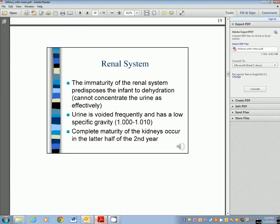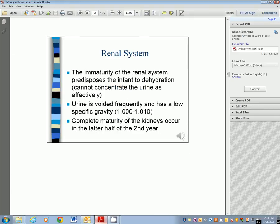The renal system. The immaturity of the renal system predisposes the infant to dehydration. If they can't concentrate the urine effectively, it's going to go out. Urine is voided frequently and has a very low specific gravity, 1.000 to 1.010, that's almost the specific gravity of water. Complete maturity of the kidneys is not going to occur until the latter half of the second year.